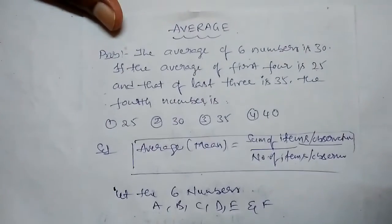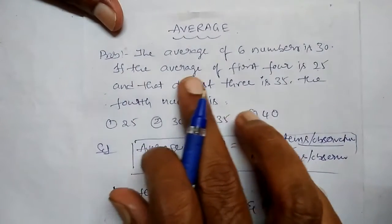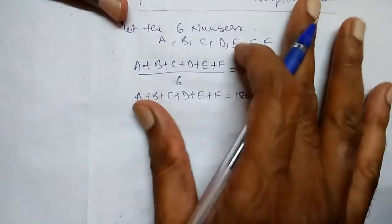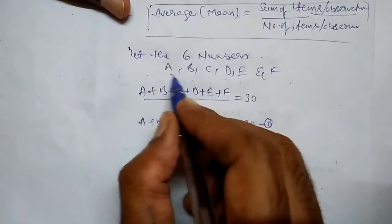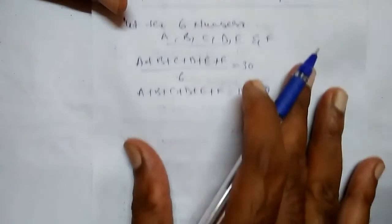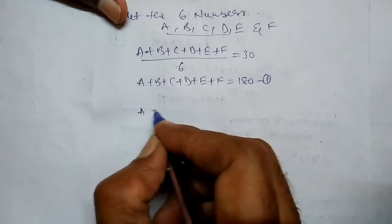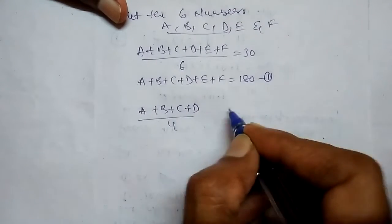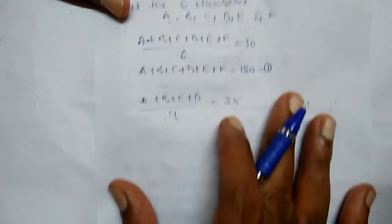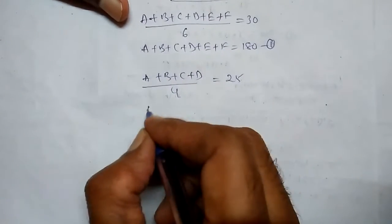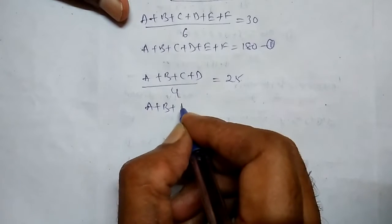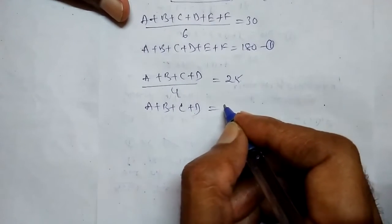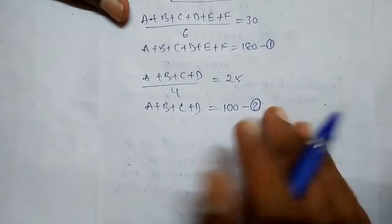Second condition: the average of the first four numbers is equal to 25. So A plus B plus C plus D divided by 4 is equal to 25. Therefore, A plus B plus C plus D is equal to 100. This is the second equation.